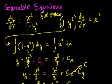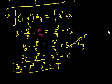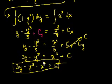Any constant there will satisfy the original differential equation. If you want to solve for that constant, someone has to give you an initial condition — for example, when x is 2, y is 3, and then you can solve for c. Let's do another example that includes an initial condition.